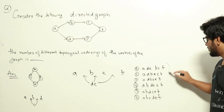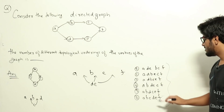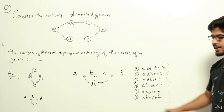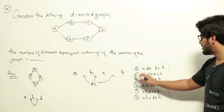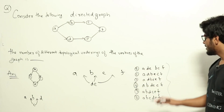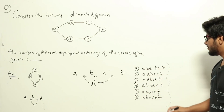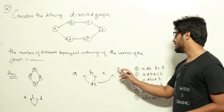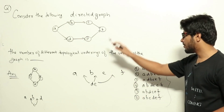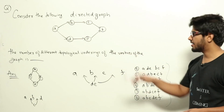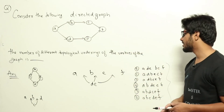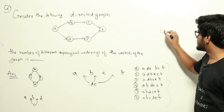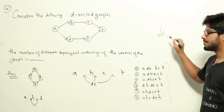Looking at all the orderings, there are only six ways of arranging A, B, C, D, E, F while following all the rules specified by the graph. You can verify this yourself. So the answer to this question is six.